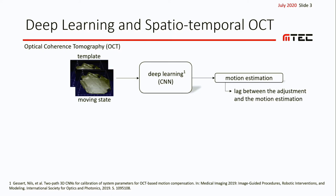Recently, deep learning methods have shown promising results for motion estimation using two OCT volumes. Here, two volumes — a template and a moving state — are directly used as input for a CNN to estimate the motion vector between the two images.